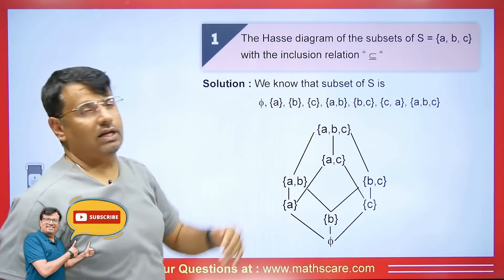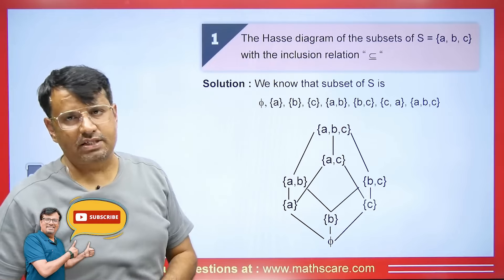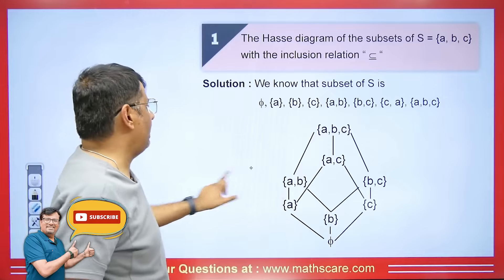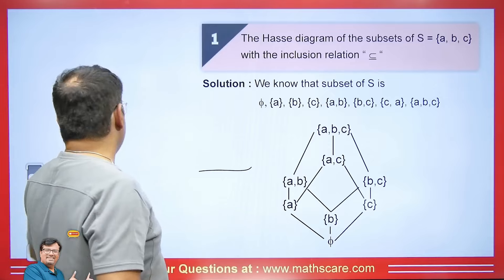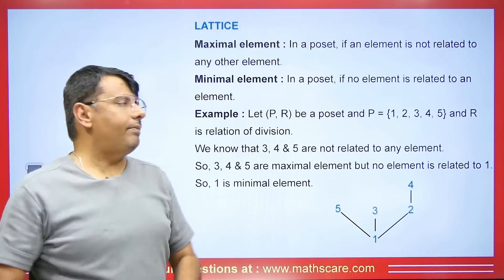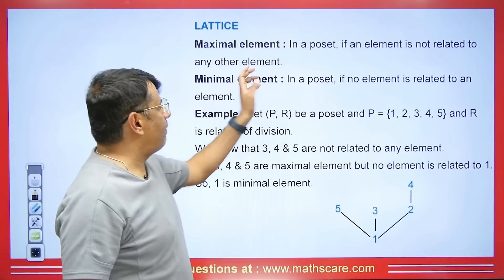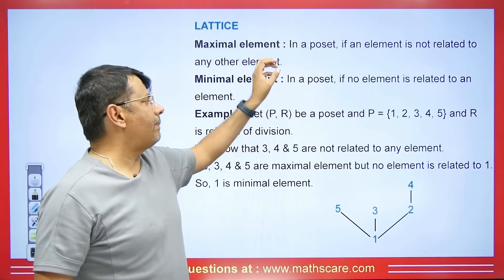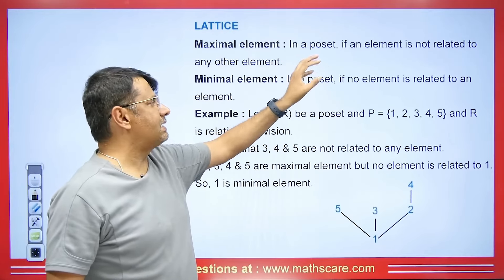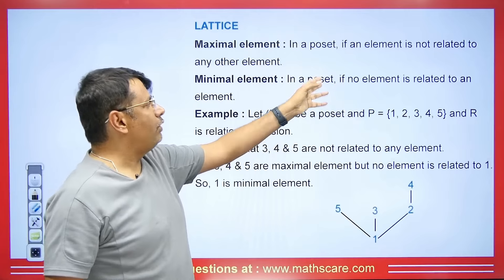In the last example — the power set diagram — the maximal element is ABC, since there is nothing above it. This will be the maximal element.